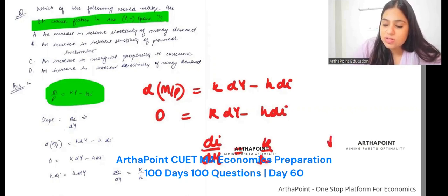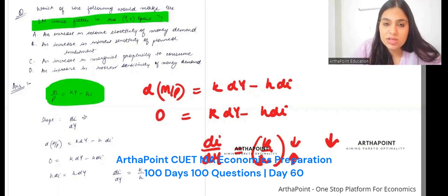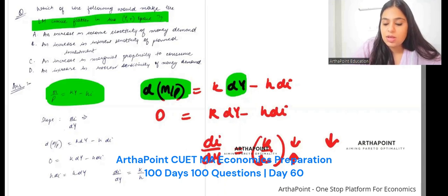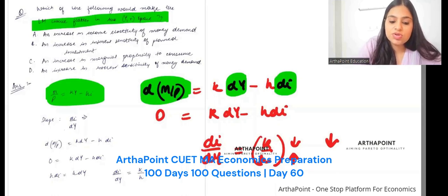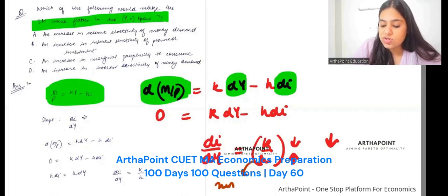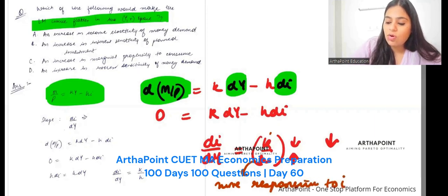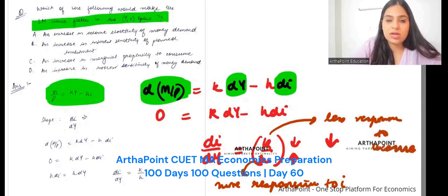To make it flatter means the slope should decrease. The slope will decrease when either k will decrease or h will increase. Either numerator will decrease or denominator will increase. k stands for how money is responsive to income, and h stands for how money is responsive to interest rate. So either more responsive to interest rate or less responsive to income. Both are correct.